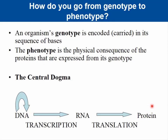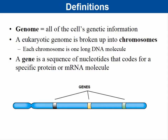A genome is all of the cell's genetic information. A eukaryotic genome is broken up into chromosomes — each chromosome is one long DNA molecule. Your somatic cells have 46 chromosomes, each a long DNA molecule. Along each chromosome are genes — specific sequences of nucleotides that code for a protein or an mRNA molecule. Only about 1.5% of the human genome actually codes for proteins.